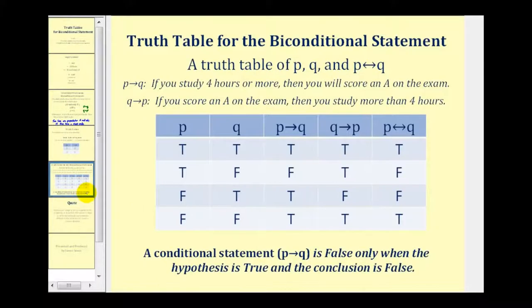Here we want to complete the truth table for P, Q, and P if and only if Q. So to do this, we're going to create a table with P, Q, if P then Q, and then if Q then P. And remember that the biconditional statement is going to be true only when both these conditional statements are true.